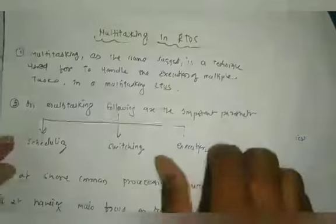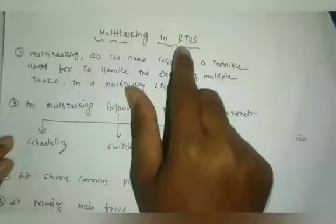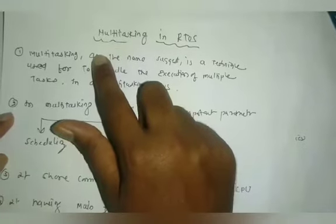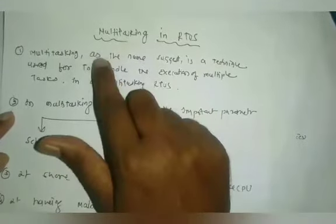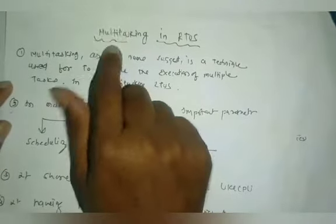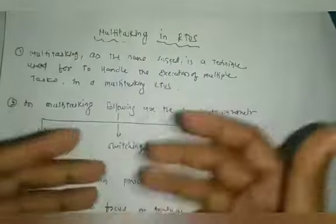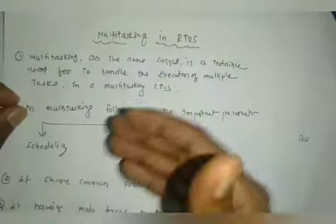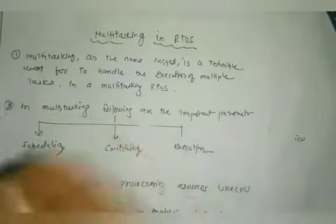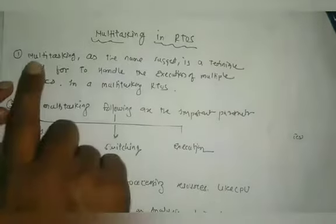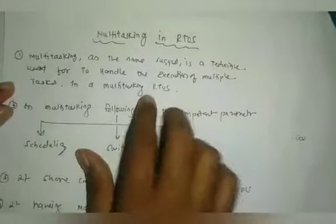Good morning friends. Today's topic is multitasking in RTOS. Multitasking means providing a microcontroller or real-time operating system with multiple tasks at the same time. If the real-time operating system works on multiple tasks, it is called a multitasking operation.